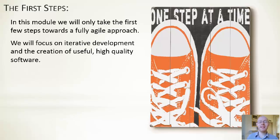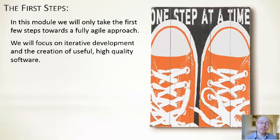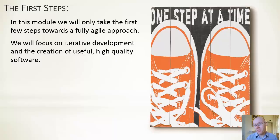What does that mean? It means that within this module, we're not going to try to do a full Agile or Lean development technique like Scrum. In your third-year modules, you will get to do this. In this particular module, we are going to take a few of the underlying principles — the key principles that underpin Lean and Agile — and focus on those. Relatively simple ones, but focus on doing them well. We will focus on iterative development and the creation of useful, high-quality software. These are the key things that underpin Agile and Lean.